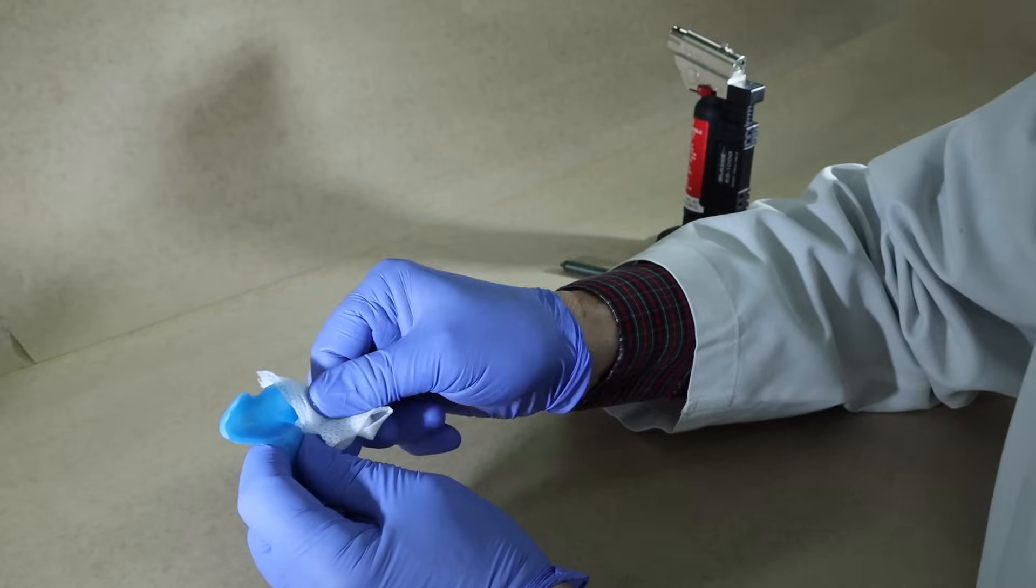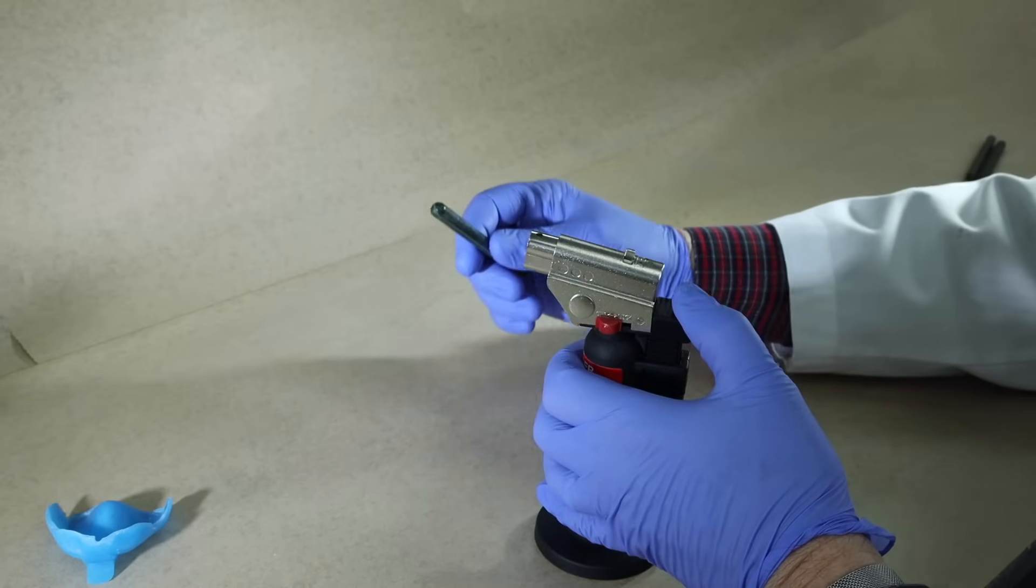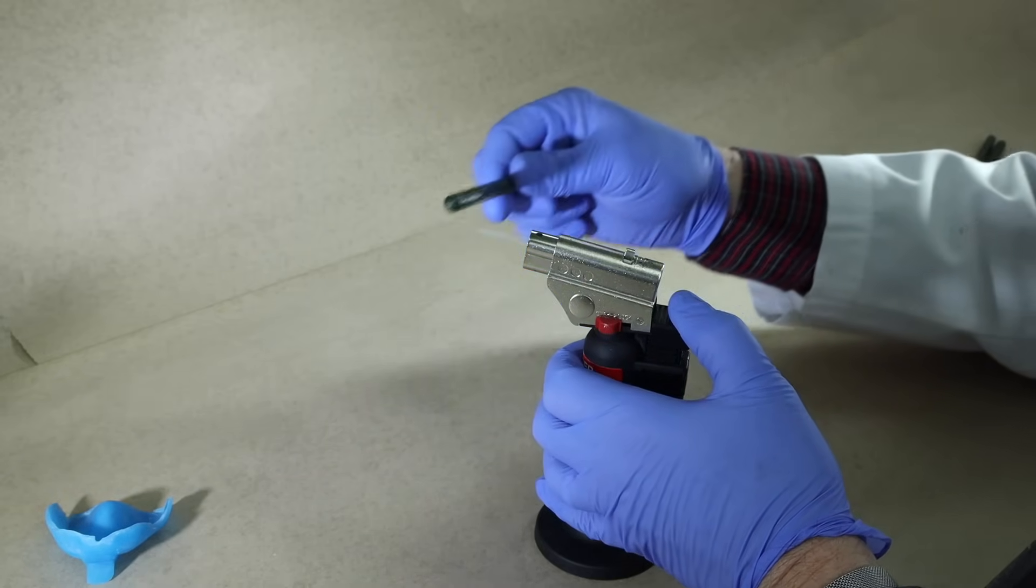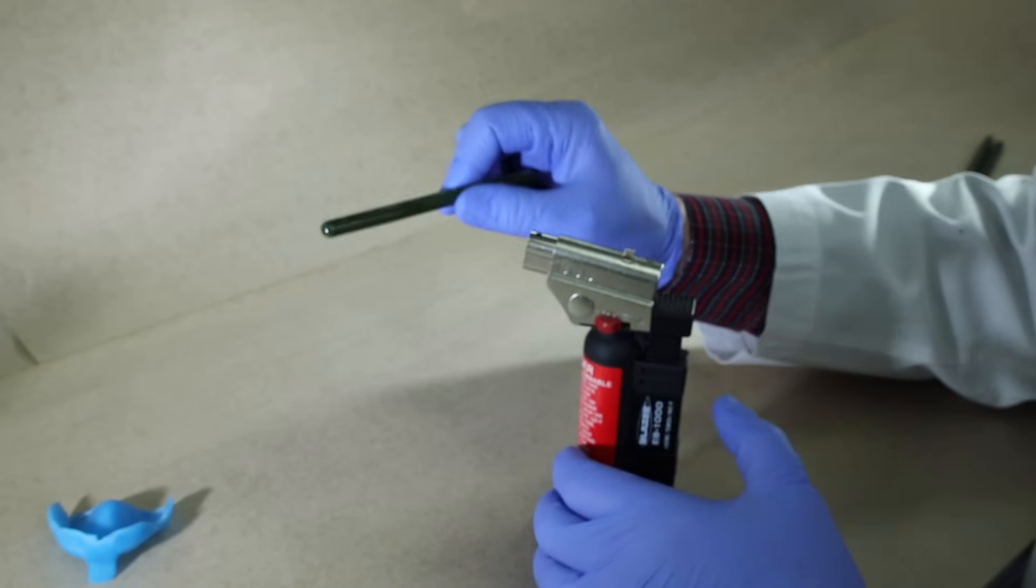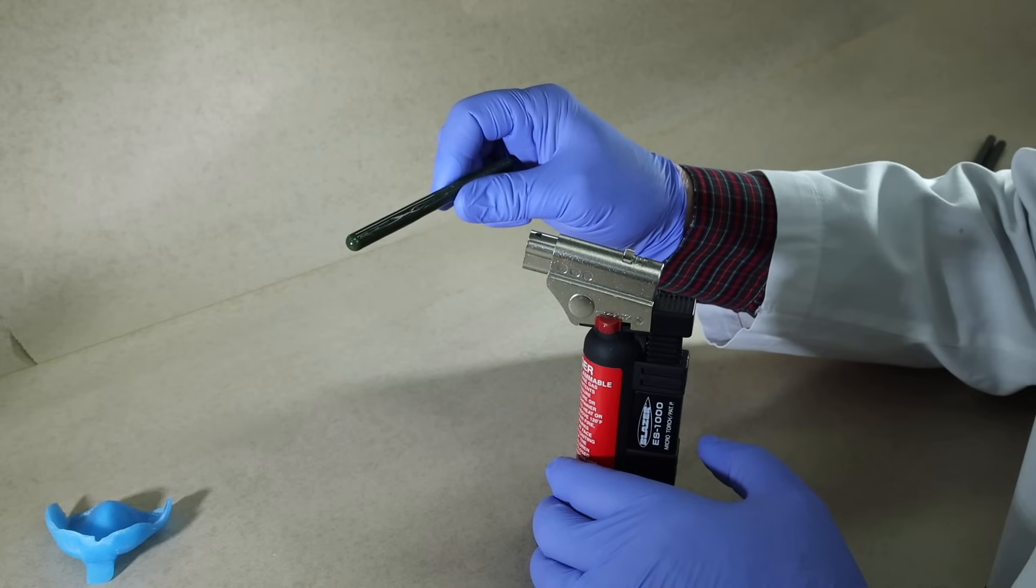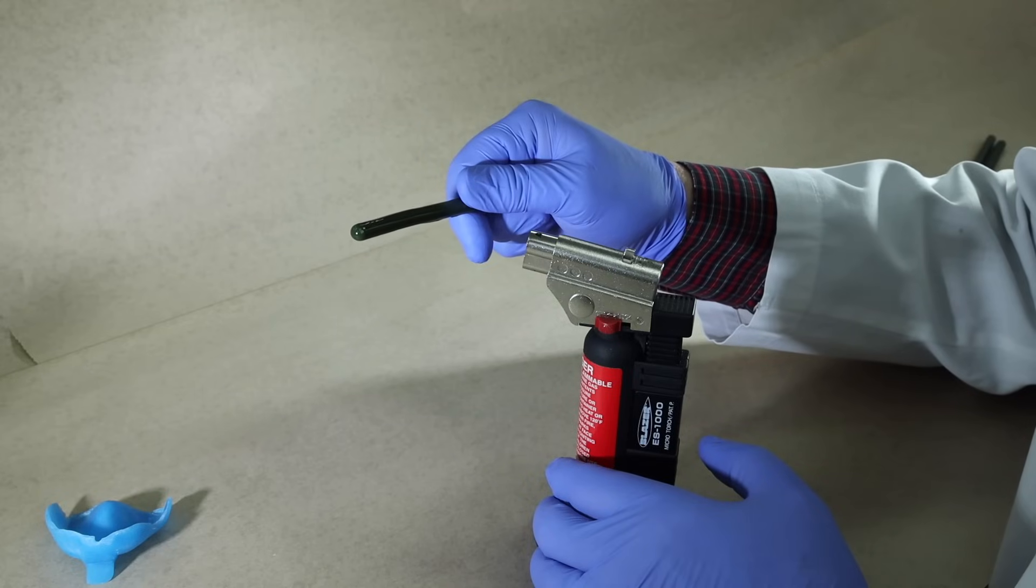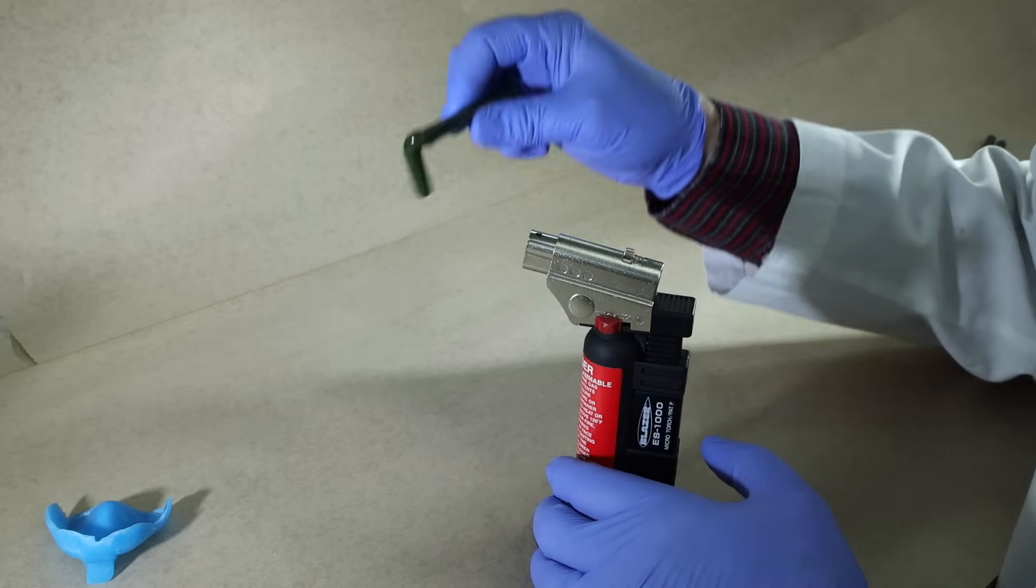Dry the periphery of the tray. Otherwise, the compound may not stick. Heat the modeling compound using a Bunsen burner or butane torch until it just starts to droop. The compound will continue to soften after it is removed from the heat source. It is an insulating material, so if you heat it until it is really runny, it will continue to soften and be difficult to work with.